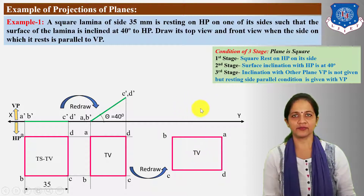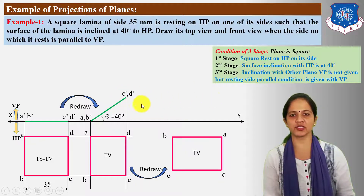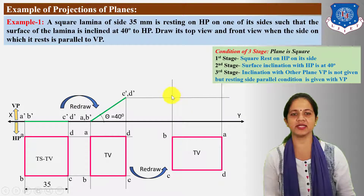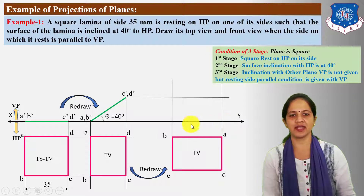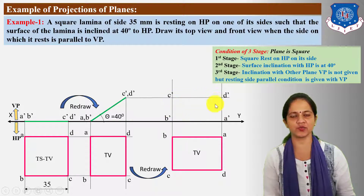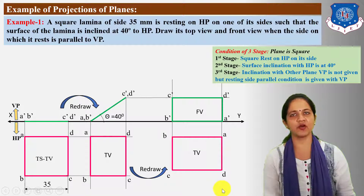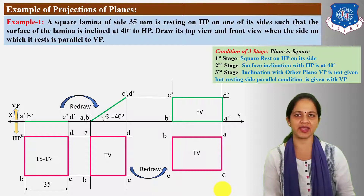For the front view apparent shape, draw horizontal projections from the second stage front view and vertical projections from the third stage top view. Both projection lines for each particular point intersect at one point. Mark elevation points A', B', C', D' and connect them in proper sequence to form a line indicating the front view apparent shape. This completes the example of the square lamina as per the given conditions with HP and VP.